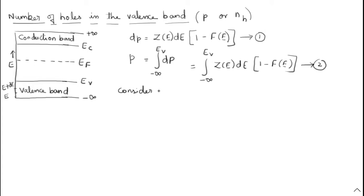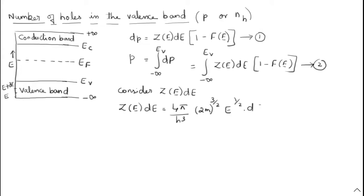Consider Z(E) · dE — how many energy states are available for hole occupancy. The general formula is Z(E) · dE = (4π / h³) · (2m)^(3/2) · E^(1/2) · dE. We are going to make two modifications. The first modification: instead of m, I am going to write m_H*, the effective mass of the hole.